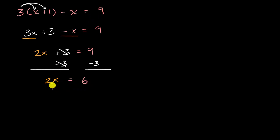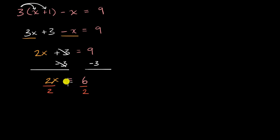Now we're in the home stretch. If we just want to isolate x on the left-hand side, we can divide the left-hand side by two. But if we divide the left-hand side by two, in order to maintain this equality, we have to divide the right-hand side by two as well — because if we multiply, divide, add, or subtract on one side, we have to do the same on the other side. So we are left with x is equal to six divided by two, which is x is equal to three. And we have solved it.